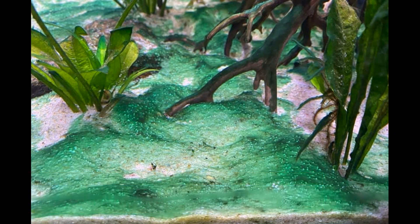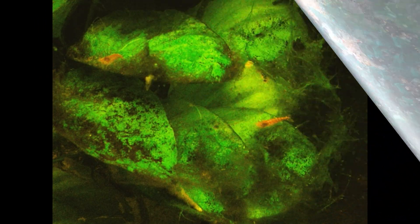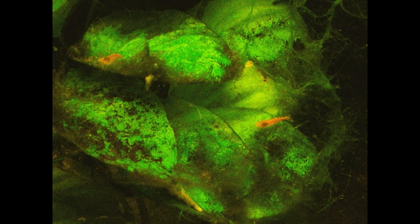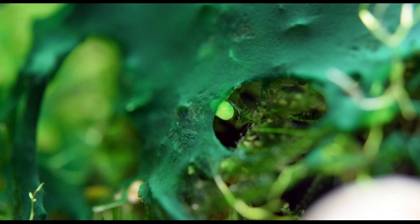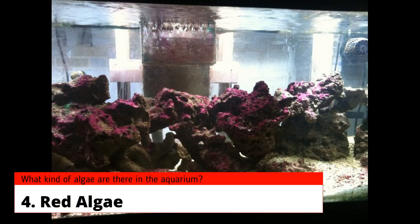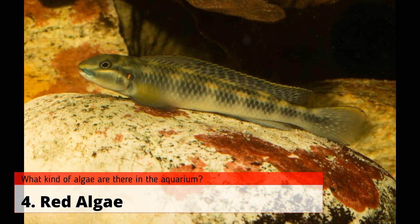Three: blue-green algae, or cyanobacteria. Blue-green algae are not true algae but can appear as slimy mats or films in the aquarium. They can range in color from greenish-blue to black. Blue-green algae growth is usually a sign of poor water quality, high nutrient levels, or low water circulation.